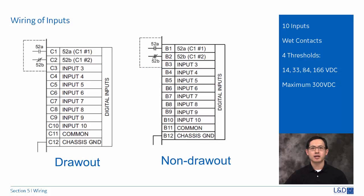Three series relays has 10 digital inputs. C1 to C10 are for drawout type and B1 to B10 are for the non-drawout type. These contacts are wet contacts.